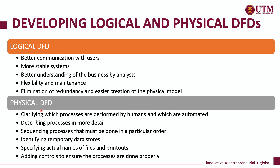For a physical DFD, this is where we clarify which processes are performed by humans and which should be automated, and each of these processes must be shown in detail. The sequence of processes becomes more important in a physical DFD and must be shown in a practical order. It should also show any temporary data stores involved, and each output or file should be named with the actual file and printout names.